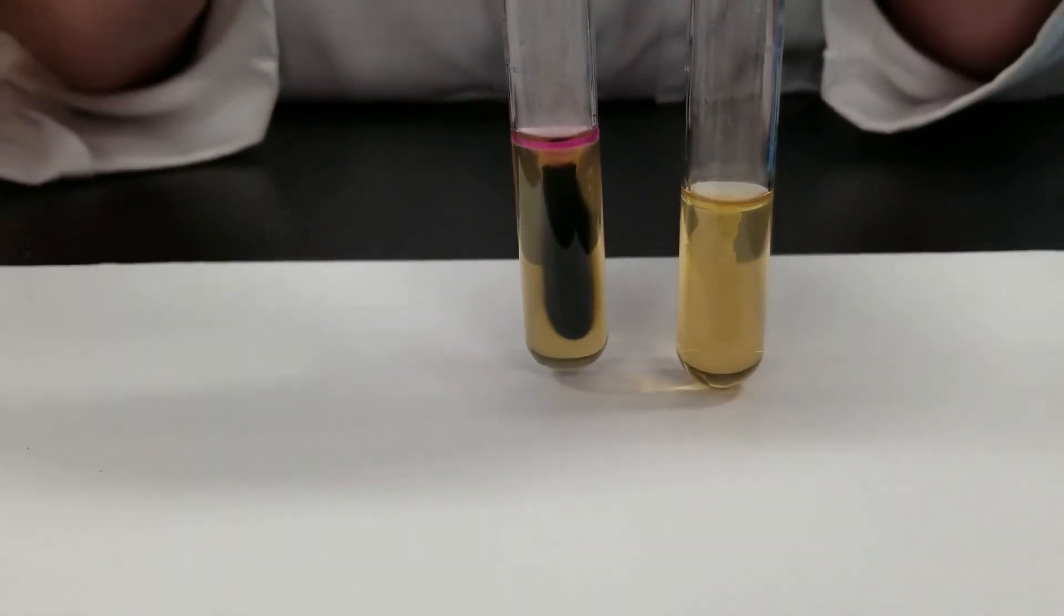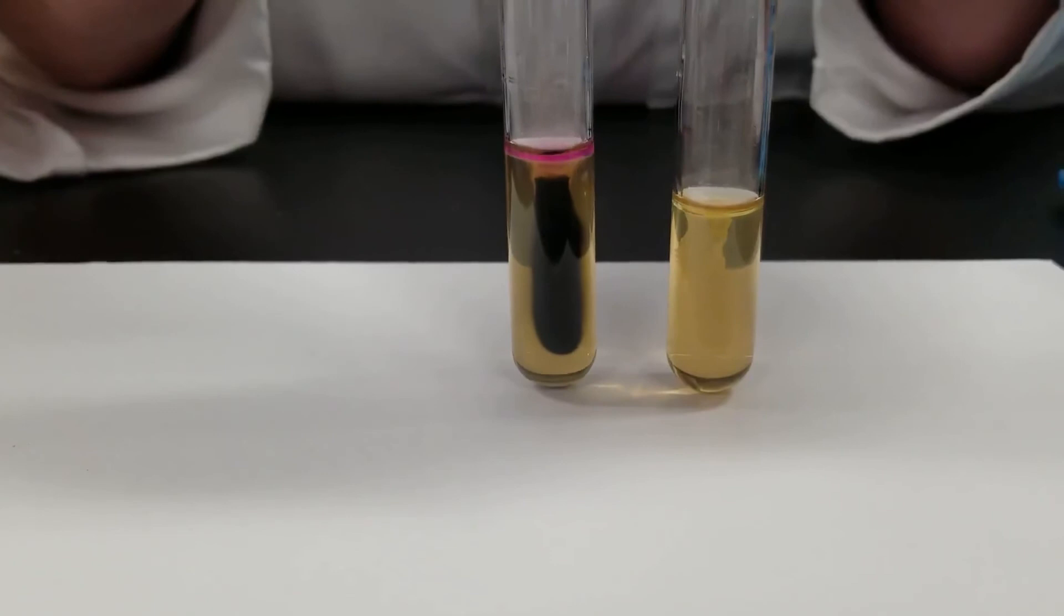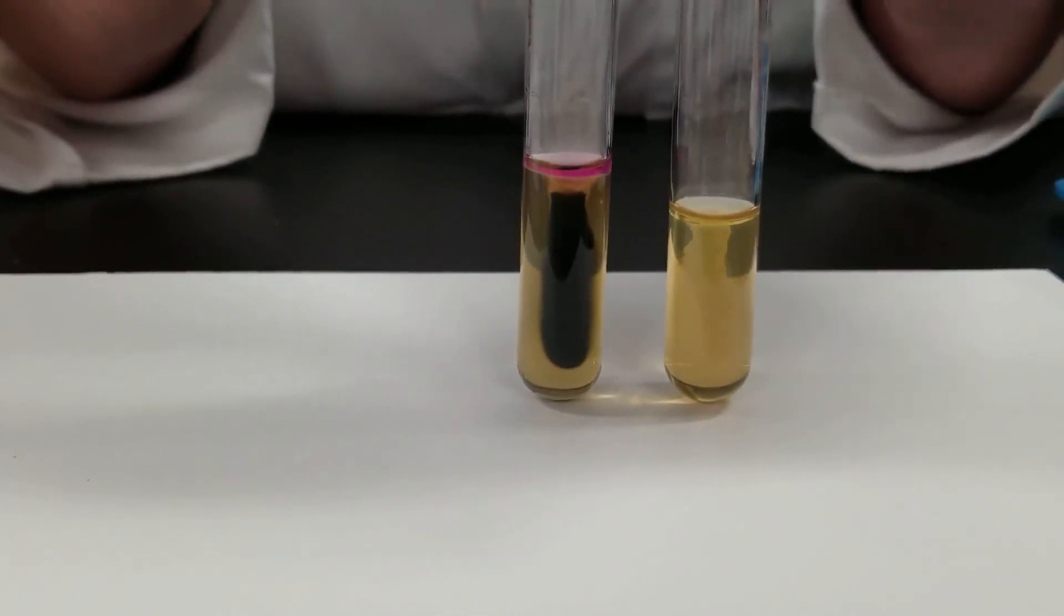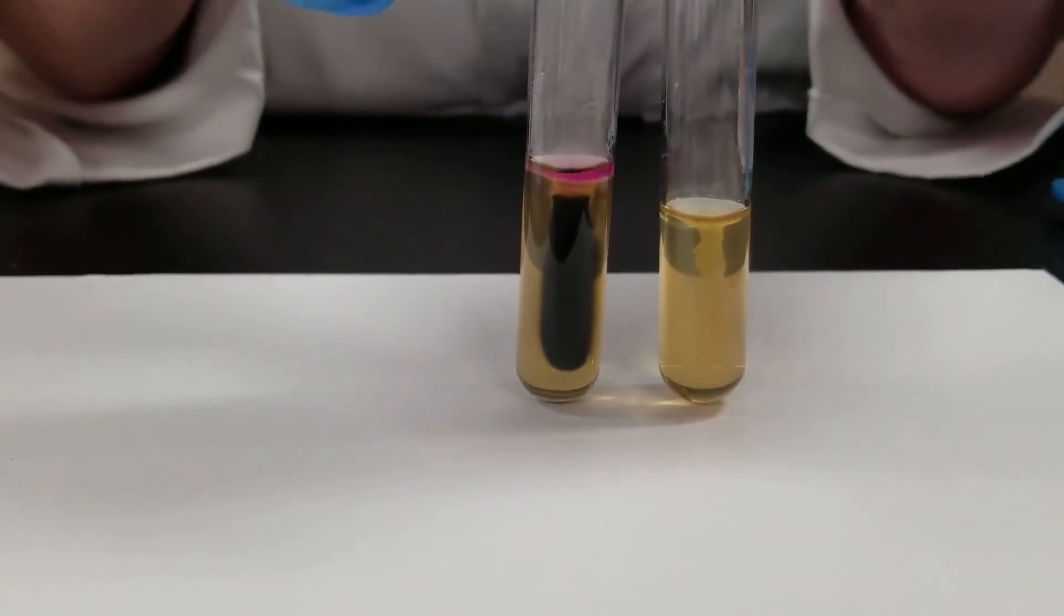So red is positive, yellowish is negative. In this case, you can see the color change occurs almost immediately.